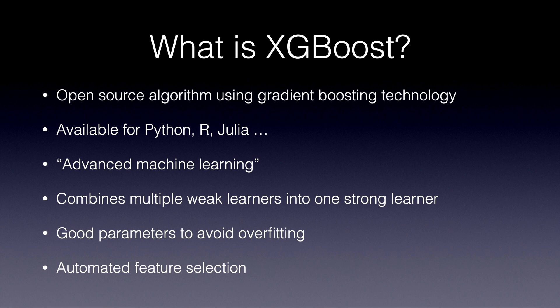So what is XGBoost? It's an open source algorithm that uses the gradient boosting technology, as the name suggests. Since this is a beginner tutorial I don't want to go too much into the technicalities, but roughly speaking, XGBoost combines hundreds or even thousands of on their own relatively weak learning algorithms — for example small decision trees — and iteratively combines them in such a way that they create one very strong learning algorithm.